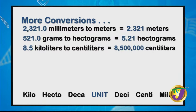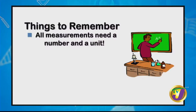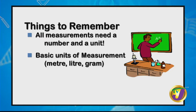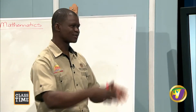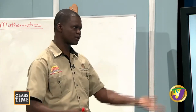To summarize: all measurements need both a number and units — '350' means nothing, but '350 meters' tells me I'm looking at length. The basic units of measurement are meter, liter, and gram. To convert metric units: determine which unit you're using, look at where you want to go, count the number of spaces between, and determine the operation — multiplying when going from a larger unit to a smaller unit, dividing when going from smaller to larger.